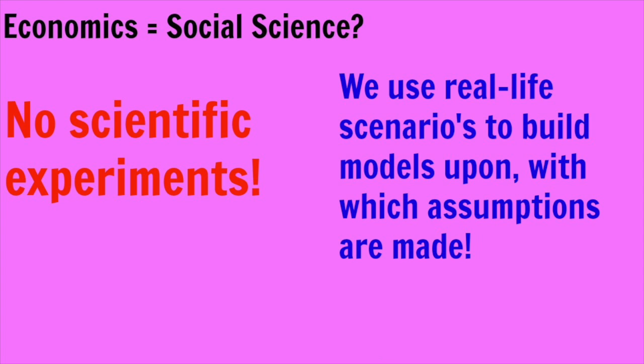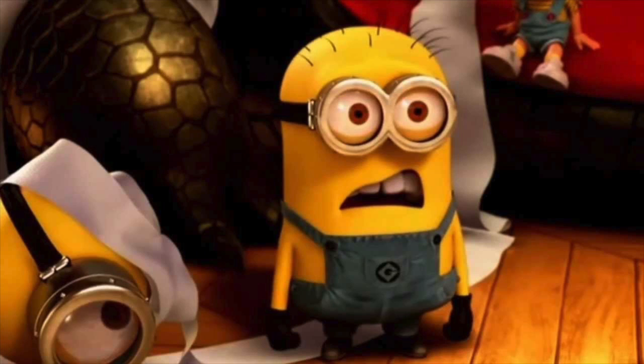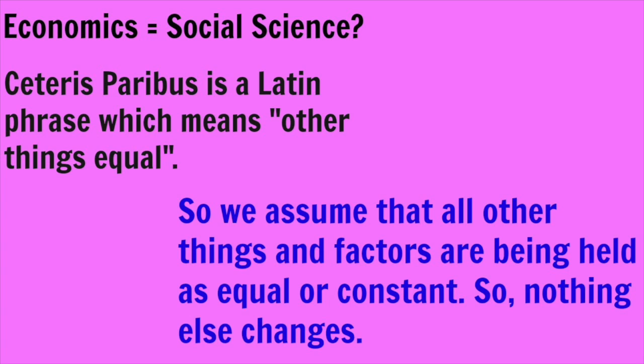Rather, we use real life scenarios to build models upon, with which assumptions are made. A key assumption made in economics is the assumption that events occur with Ceteris Paribus. It's not as confusing as it sounds — Ceteris Paribus is just a Latin phrase that means 'other things equal.' So this assumption is that all other things are being held equal or constant, so nothing else changes.